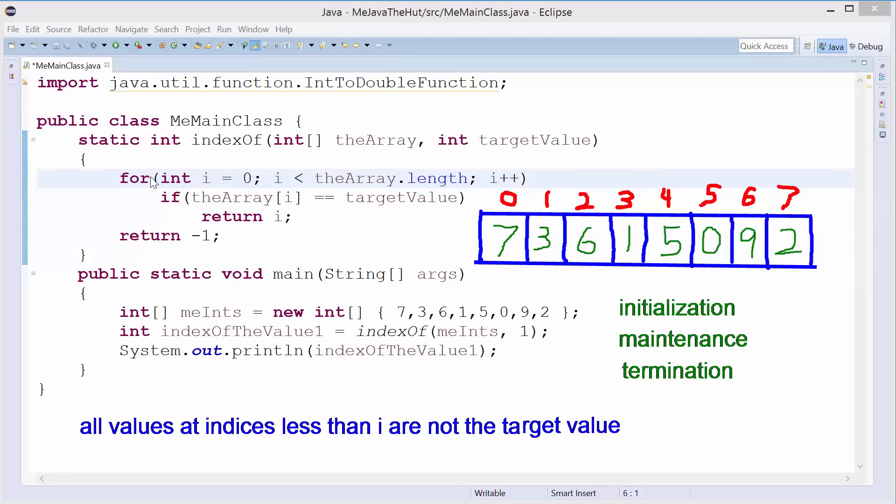Now, don't be dumb like me and see these three things and always think for loop. Thinking about a for loop is a great way to start to understand these things. But these three terms, initialization, maintenance, and termination, go well beyond just a basic for loop. It's a general algorithm structure. All right? But here, I'll just talk about it briefly in the context of a for loop here.